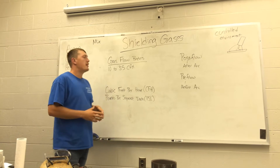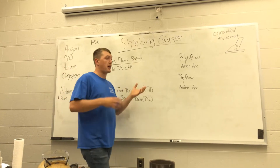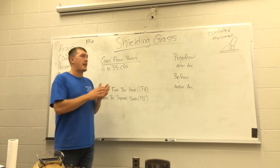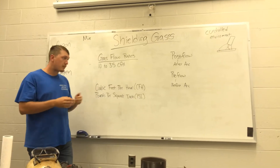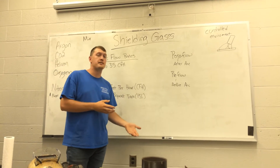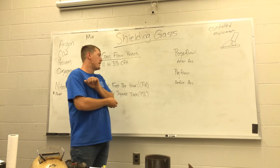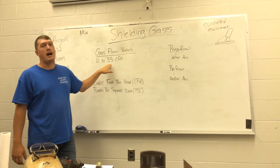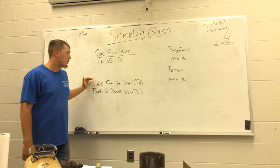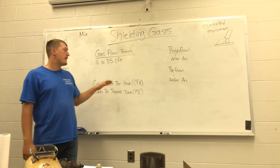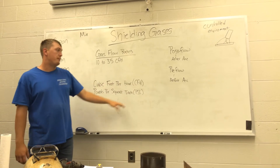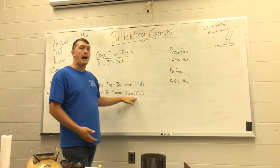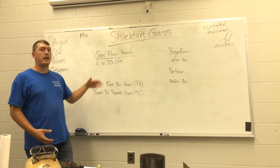We're going to jump into purging a little bit more too. Whenever we set up our machine — and we're actually going to show you guys how to set up a flow meter and a regulator on a machine — there are some different things we can do. We have gas flow rate, which is how much gas we're putting through that machine on top of our weld. The gas flow rate would be 10 to 35 CFH. CFH stands for cubic feet per hour — you need to know that as a welder. There's a giant difference between cubic feet per hour and pounds per square inch, PSI.